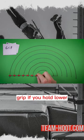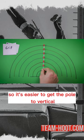Grip. If you hold lower, your arc is smaller so it's easier to get the pole to vertical.